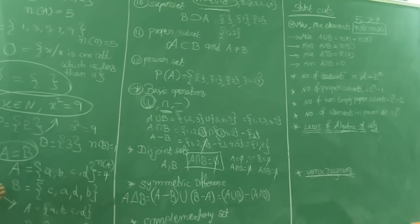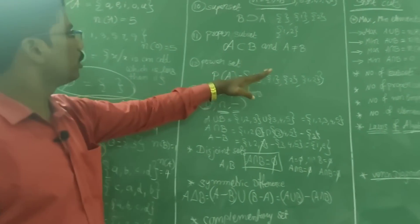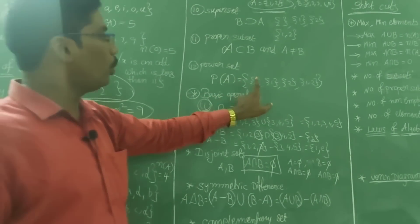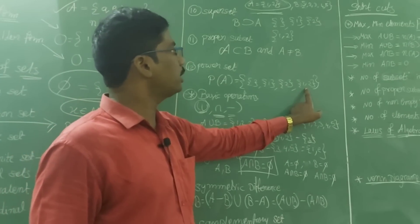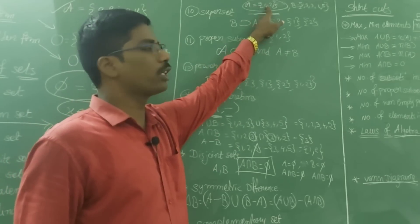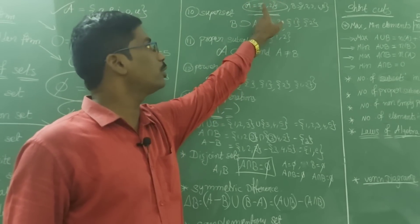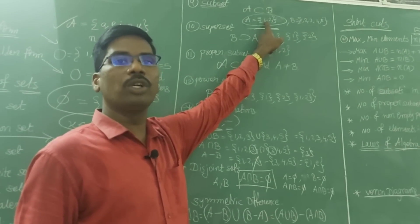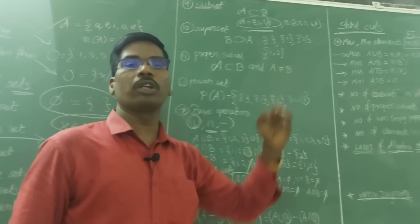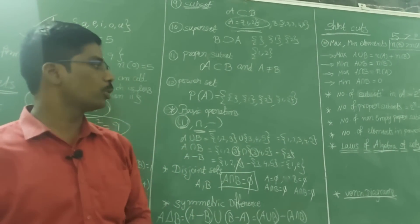Number of elements in a power set is also 2ⁿ. For example, if A has 2 elements, the power set has 2² = 4 elements: φ, {1}, {2}, {1,2}. So the formula for the power set is 2ⁿ where n is the number of elements in A.